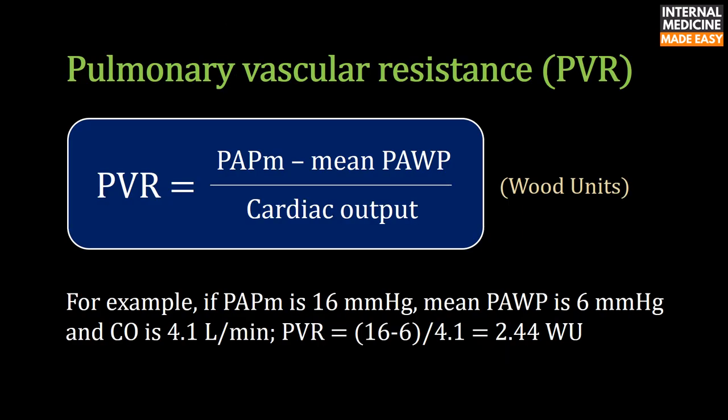Pulmonary vascular resistance is calculated by subtracting pulmonary artery wedge pressure from mean pulmonary artery pressure and then dividing the result by cardiac output. It is expressed in Wood units. For example, if mean pulmonary artery pressure is 16 mmHg, pulmonary artery wedge pressure is 6 mmHg, and cardiac output is 4.1 liters per minute, then pulmonary vascular resistance will be 2.44 Wood units.